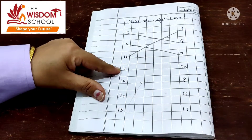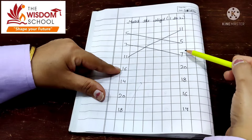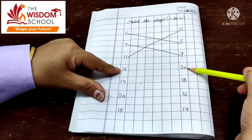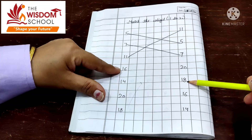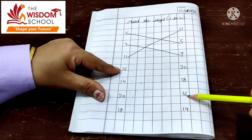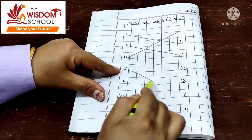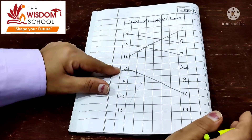16. Now start here, find karna start karo — 16. Kya ye 16 hai? No. Kya ye 16 hai? No. Kya ye 16 hai? Yes. Toh aap is 16 ko iske saath match kar doge.